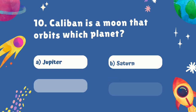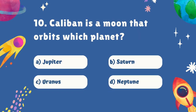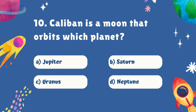Question number ten. Caliban is a moon that orbits which planet? Is it A. Jupiter, B. Saturn, C. Uranus, or D. Neptune? The correct answer is C. Uranus.